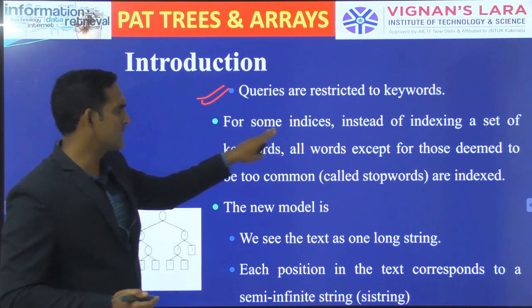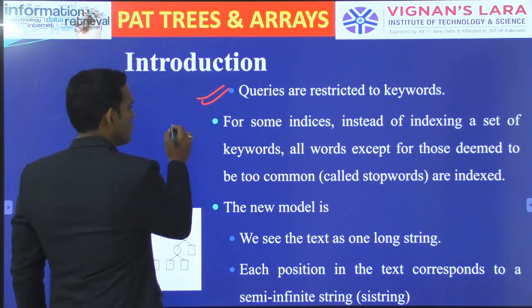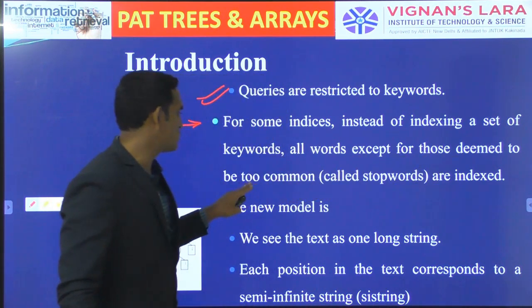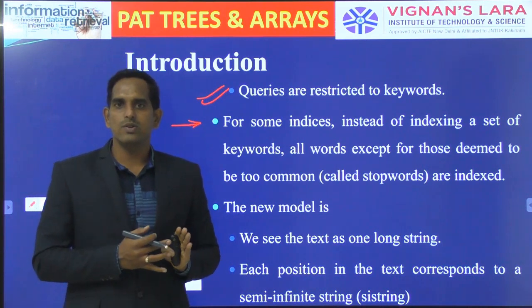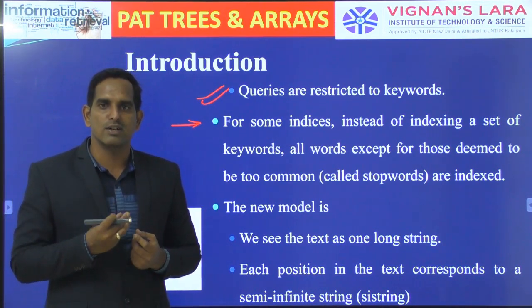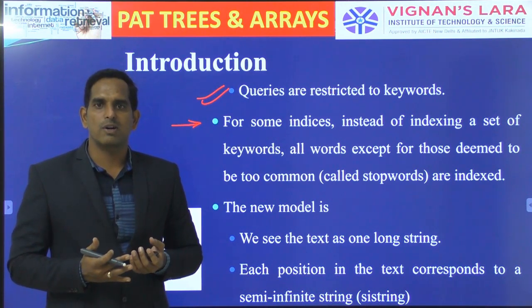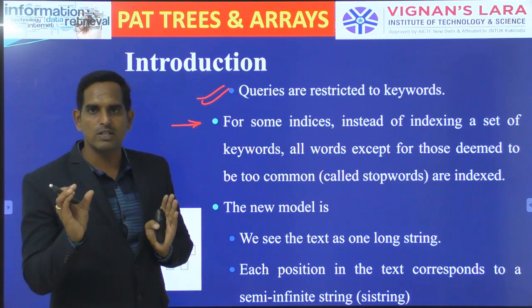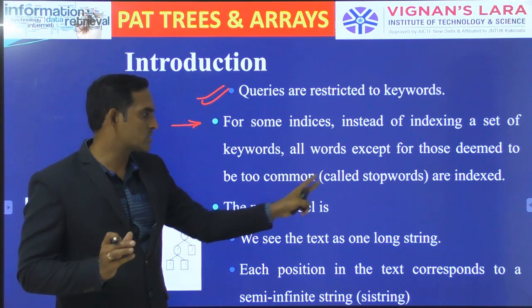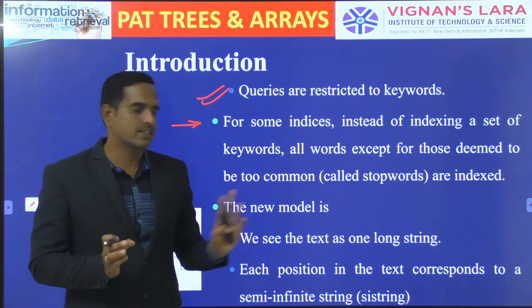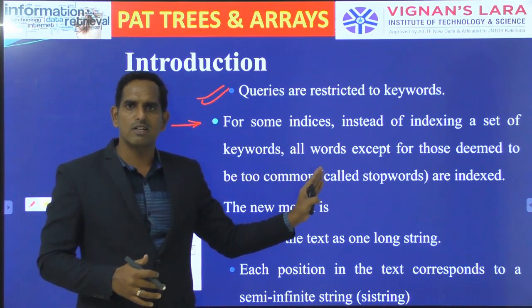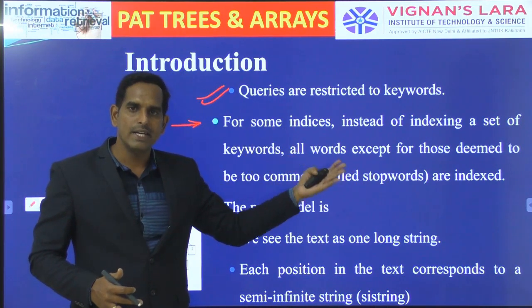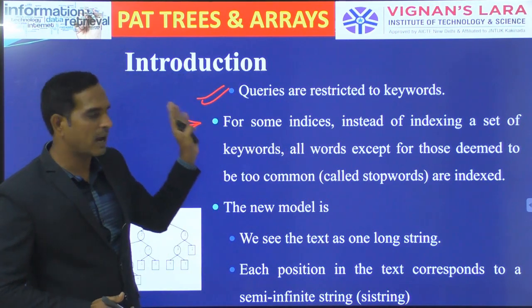To address these disadvantages, for some indices, instead of indexing only a set of keywords, all words except those deemed to be common — that is, stop words — are indexed. Stop words are words which need not be present in your index. So except for stop words, all remaining words present in your text will be indexed. This type of method is what we are going to implement in TRIES and arrays.